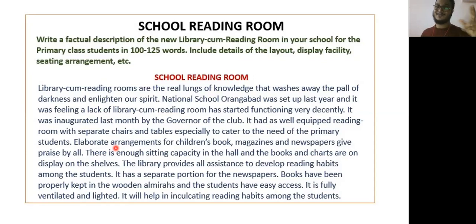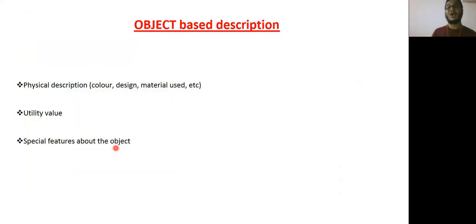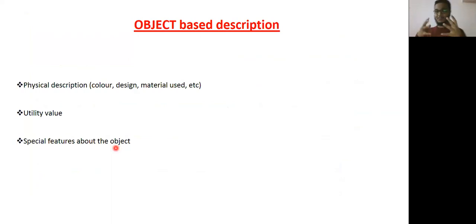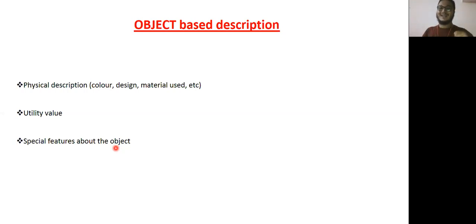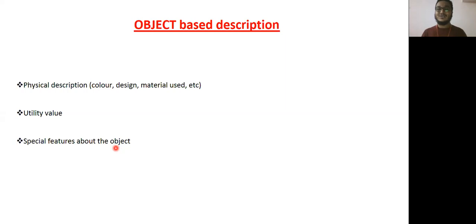We've done person-based and place-based descriptions. Now we'll go for thing-based or object-based description. For example, suppose you want to buy a mobile phone — you go to YouTube and watch technical reviews. They describe the features: hard proof, metallic, unbreakable, nice colors, design, and what material is used — whether it's tin or fiber. These are part of the physical description.